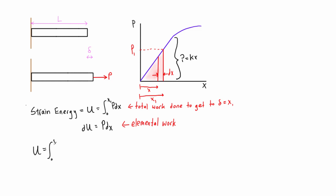So we had 0 to x1 and where we have P we will write Kx and then we had dx. Alright, so K is a constant so we're going to bring that out.